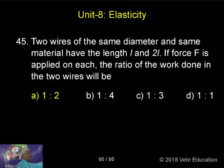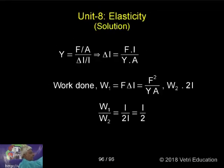Two wires of the same diameter and the same material have the length L and 2L. The force F is applied on each. The ratio of work done. For first one, work done is L. The second one is 2L. That is the difference. That is, work done is equal to F into L.